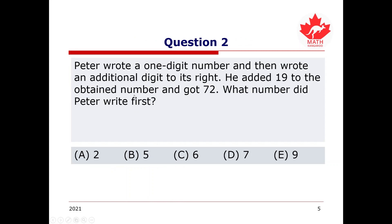On to question 2. Peter wrote a one-digit number and then wrote an additional digit to its right. He added 19 to the obtained number and got 72. What number did Peter write first? Was it A: 2, B: 5, C: 6, D: 7, or E: 9? Pause the video and try to work out an answer for yourself first.